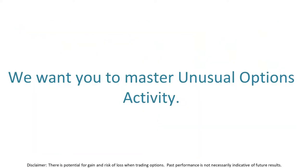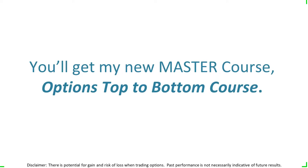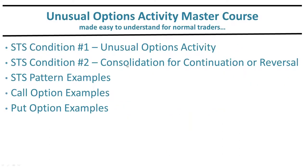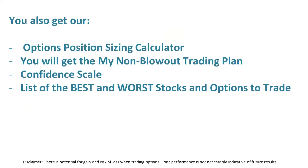We want you to master unusual option activity. You're going to get my new master course — options top to bottom. The UOA master course will walk you through the trading system soup to nuts. The course covers: condition number one — unusual option activity; condition number two — consolidation, continuation, and reversal patterns; pattern examples, call option examples, put option examples. You'll also get my option sizing calculator, my non-blow-out trading plan, my confidence scale, plus a list of the best and worst stocks to trade.